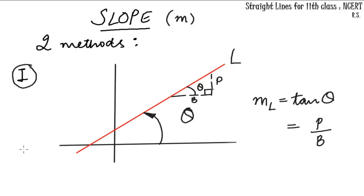Slope in mathematics is denoted by m. There are two methods defined which help us determine the slope of a straight line. Starting with the first method, it gives us a line and its inclination with the positive direction of x-axis, that is theta.